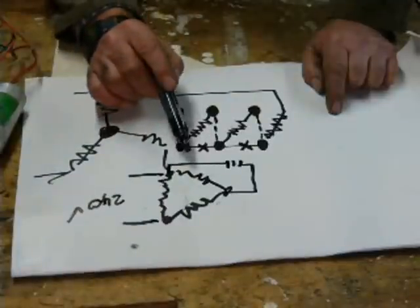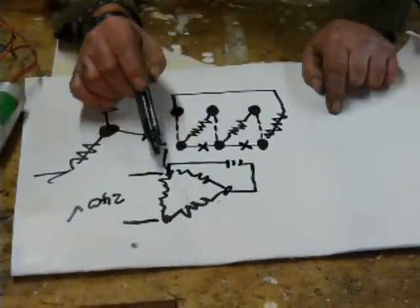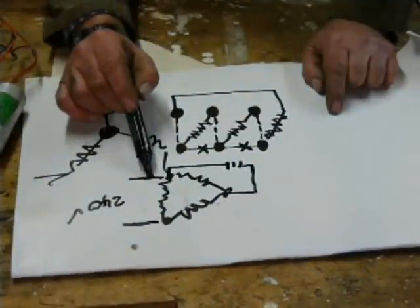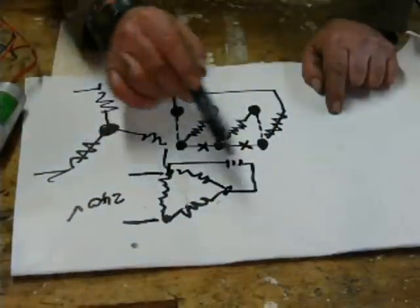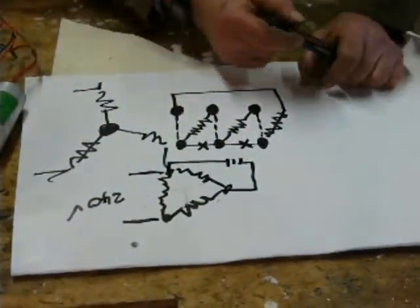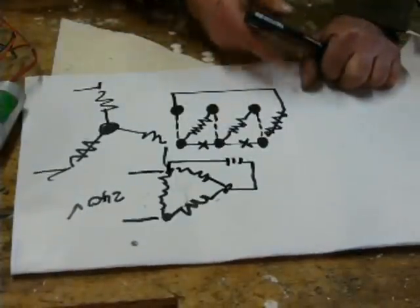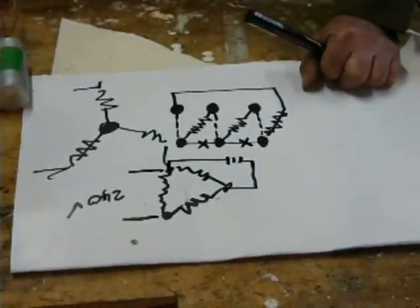And depending which way you want the motor to run, you would either come off this 240 volt link or that one, and the motor will run in an opposite direction. Simple so far.